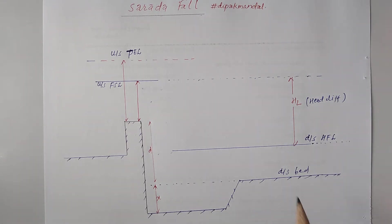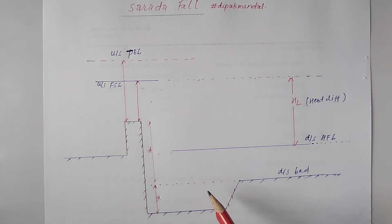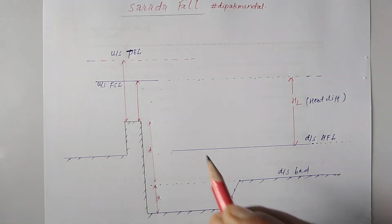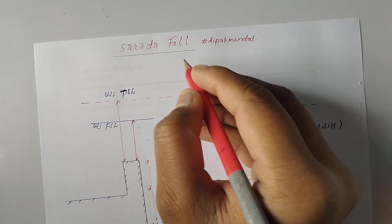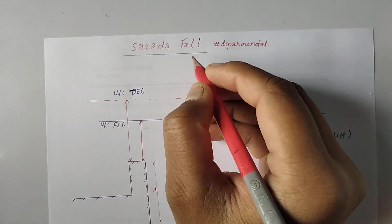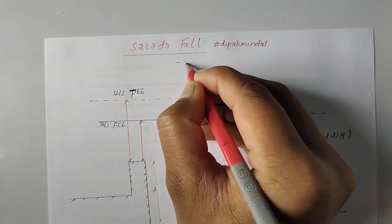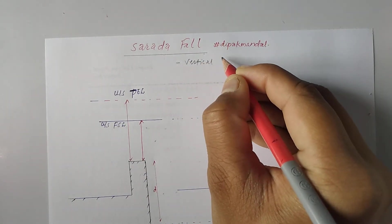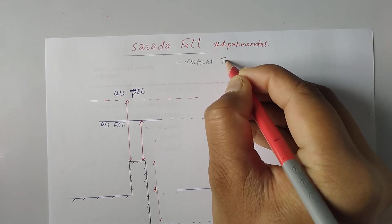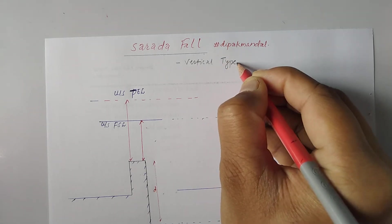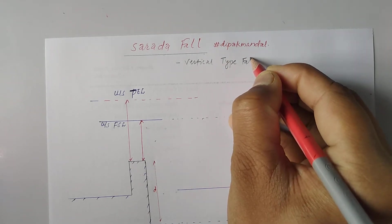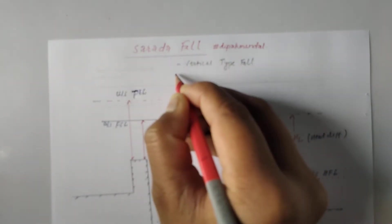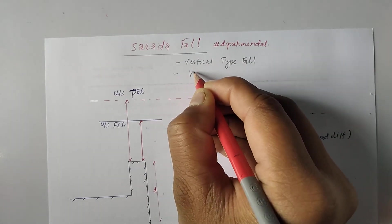Before starting the numerical, let's see some concepts related to Sarda fall. This type of fall is also called vertical drop or vertical type fall.